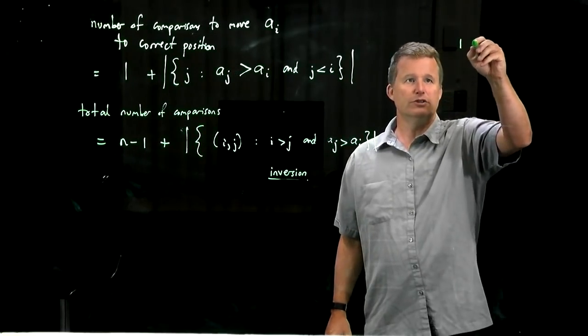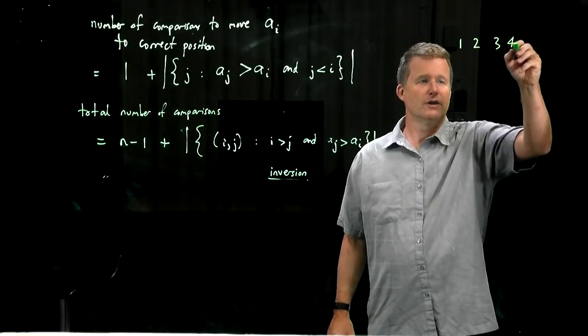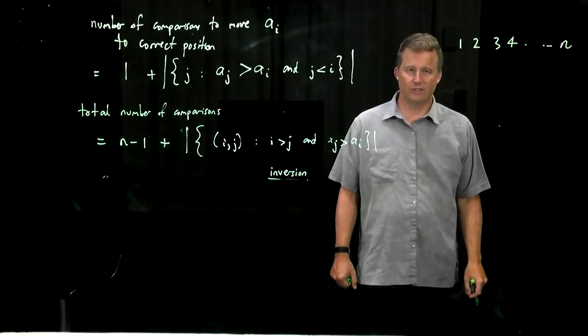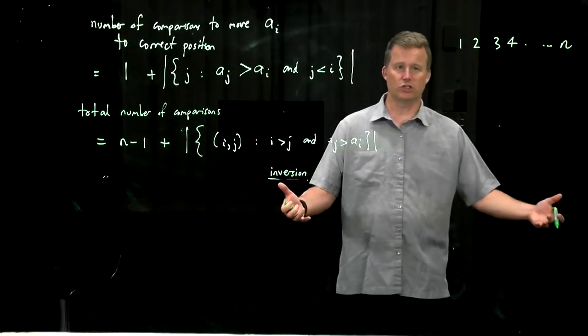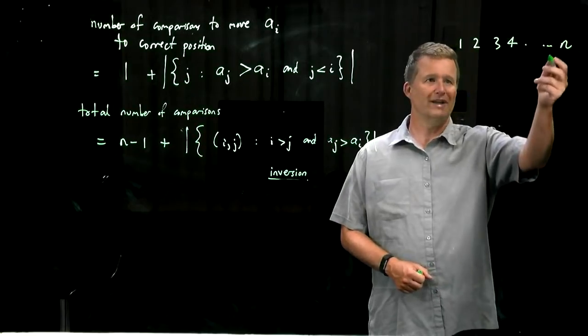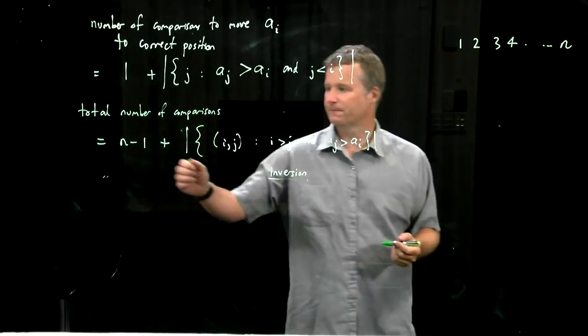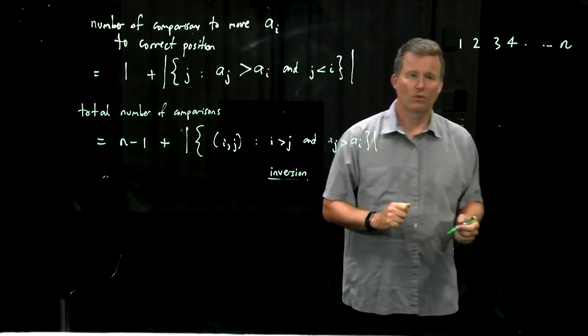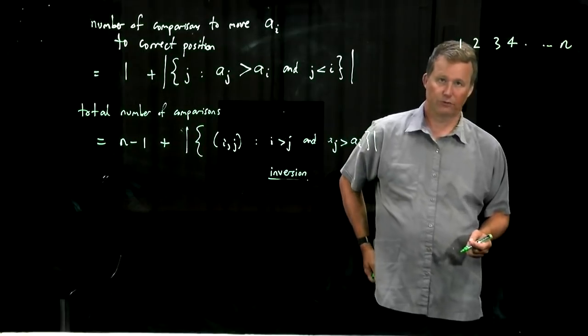So the best case for insertion sort is where you have an already sorted input and there are no inversions whatsoever there. You know there that you'll have to do only n-1 comparisons and in fact this will be 0 here. And you'll have to do no swaps or moves.